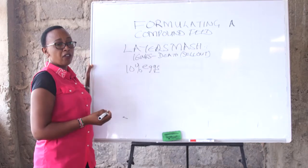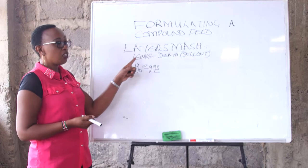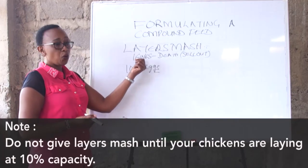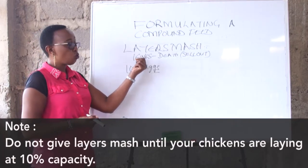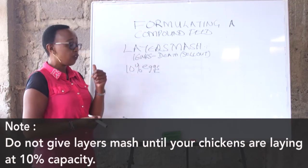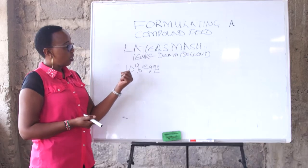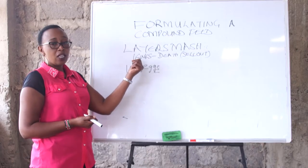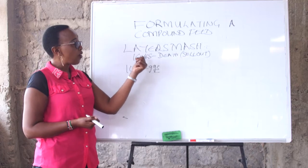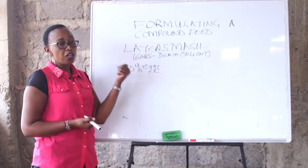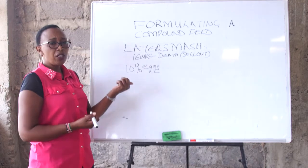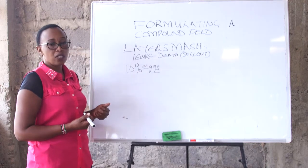It is of no economic value to give layer mash to a bird that is 16 weeks yet not laying. If you feed your bird well, you'll find the first eggs during the 16th week, and by 17 weeks you have already achieved 10% laying. But technically and nutritionally, we say layer mash should be given from 16 weeks. Don't give your bird layer mash until they have given you an egg. So what is the composition of the layer mash?